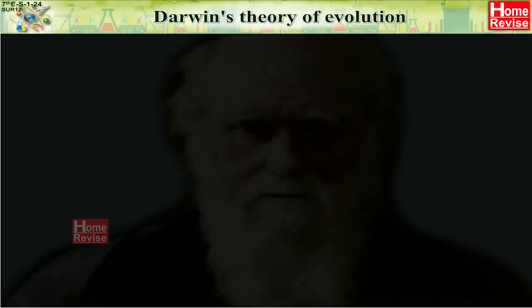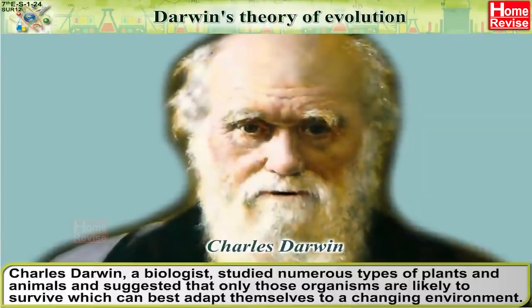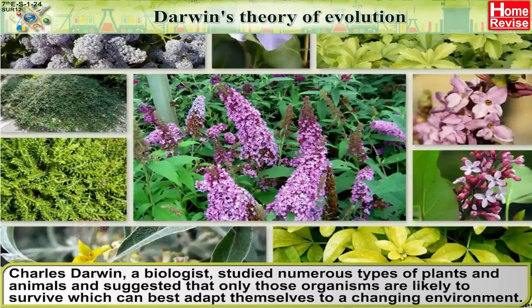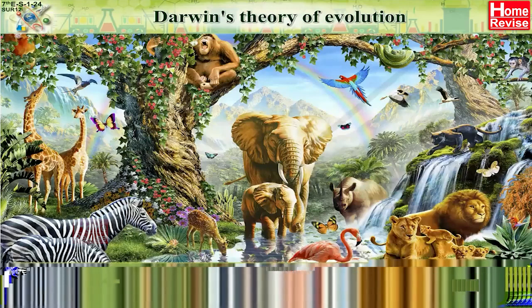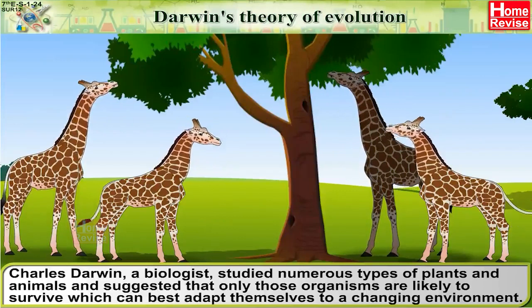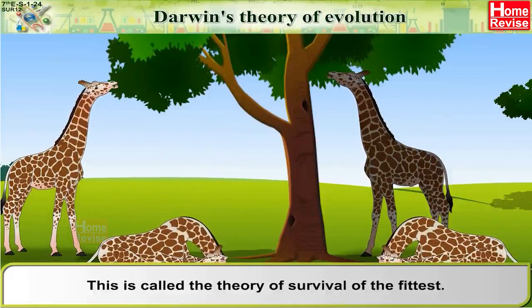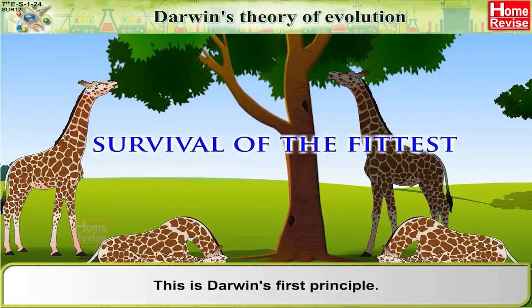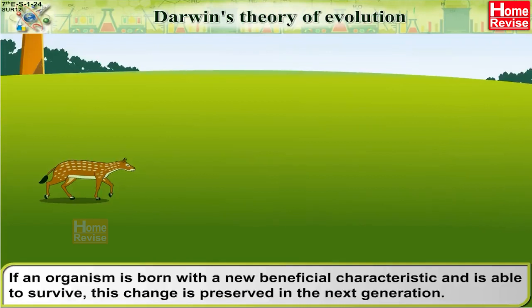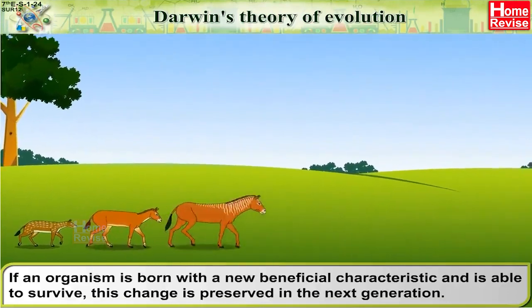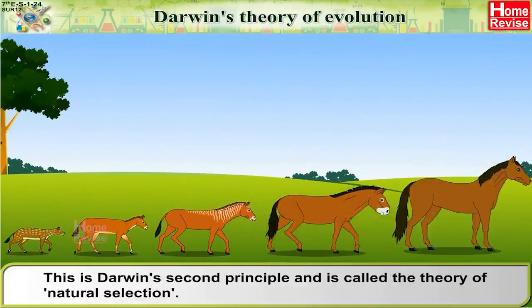Darwin's Theory of Evolution: Charles Darwin, a biologist, studied numerous types of plants and animals and suggested that only those organisms are likely to survive which can best adapt themselves to a changing environment. This is called the theory of survival of the fittest — Darwin's first principle. If an organism is born with a new beneficial characteristic and is able to survive, this change is preserved in the next generation. This is Darwin's second principle, called the theory of natural selection.